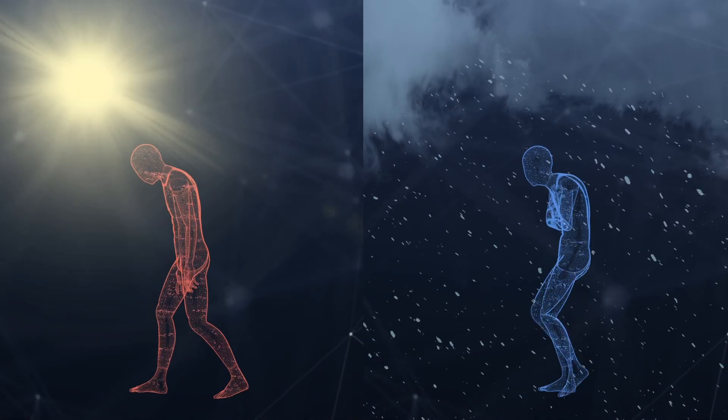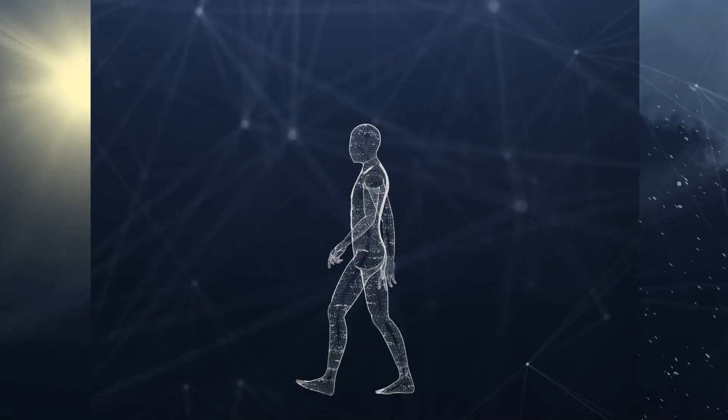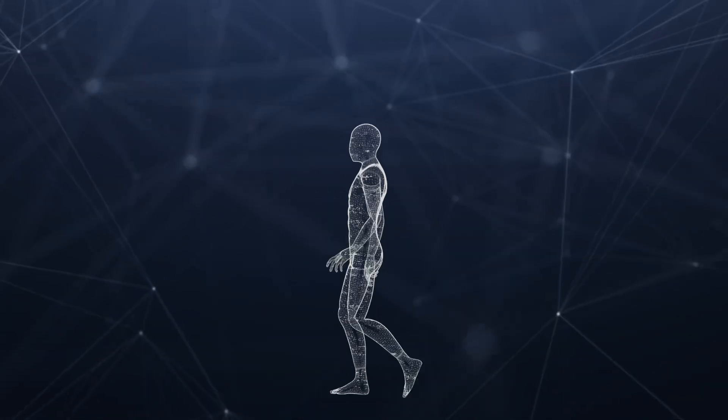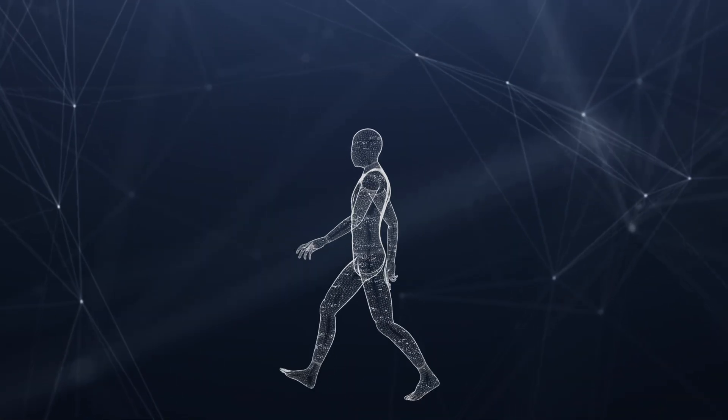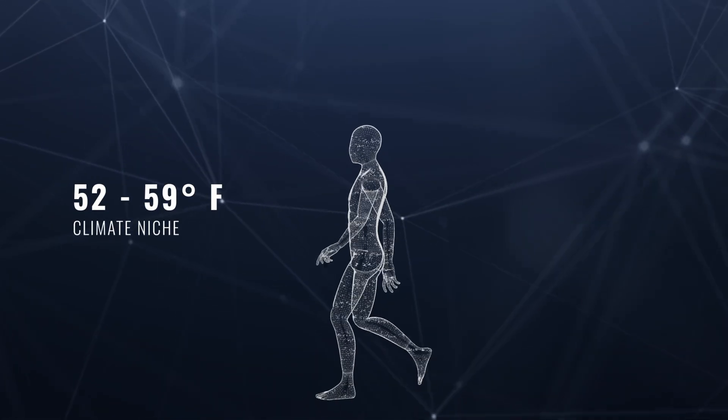Since both too hot and too cold can be deadly, it's no surprise that humans have a climate niche, a Goldilocks zone where temperatures aren't generally hot or cold enough to be deadly. This niche is found at an annual average temperature of about 52 to 59 degrees Fahrenheit.